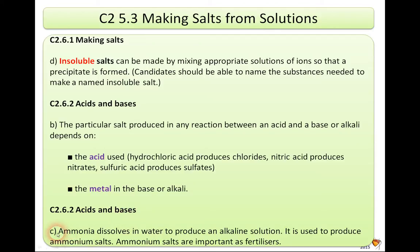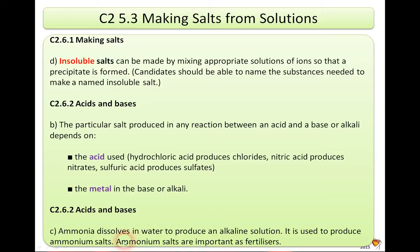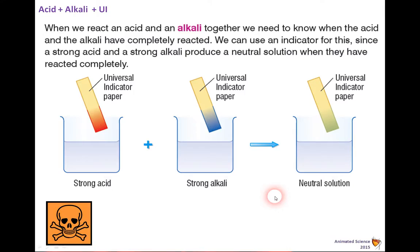The second part links to section C of the specification. Ammonia dissolves in water to produce an alkaline solution — that's the base, but it's a special type. It's soluble and is used to produce ammonium salts. Ammonium salts are important as fertilizers, and most of the food you've eaten has been due to the use of these fertilizers.